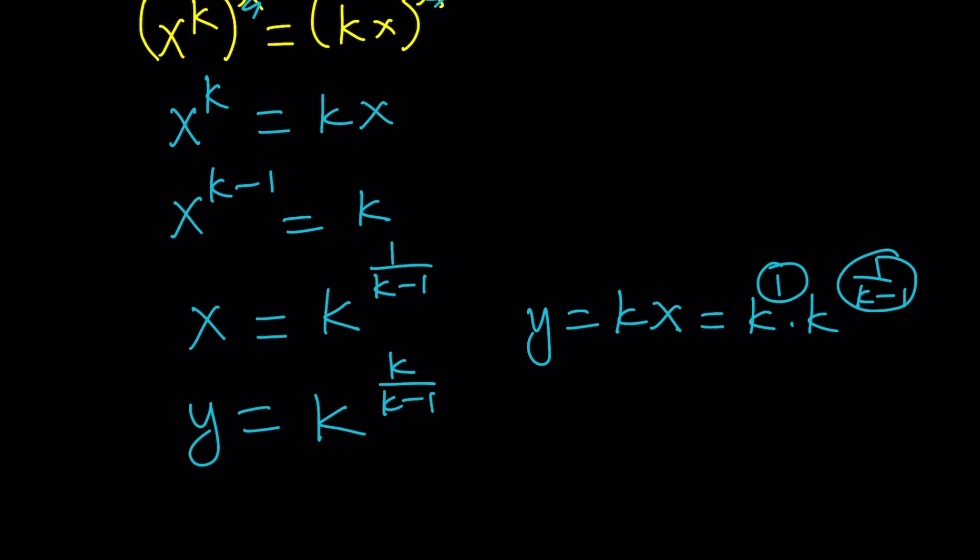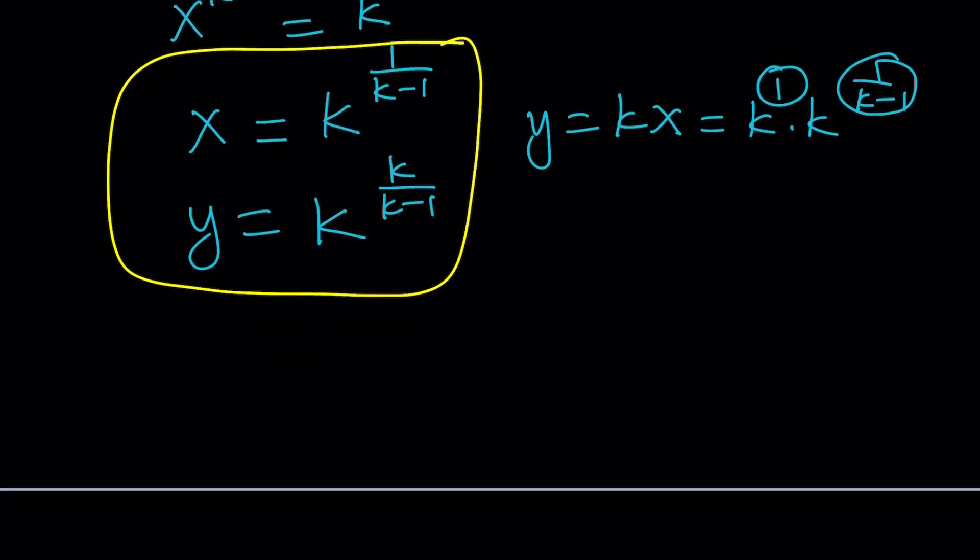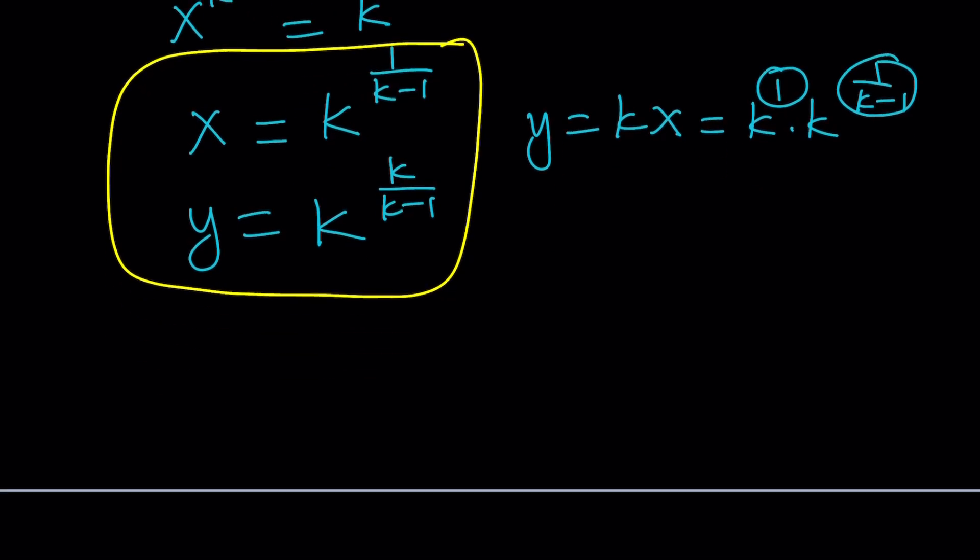And since y is equal to kx, you can basically replace x with that. k times k to the power 1 over k minus 1. This is 1. If you add these two numbers, you get k over k minus 1. So y becomes k to the power k over k minus 1. Something interesting about this solution is that y is not only k times x, but it's also x to the power k. Make sense?